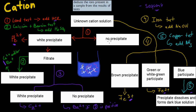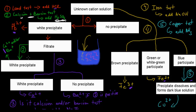For the second test, we're going to filter out any precipitate that formed so we only have the solution left — this is the filtrate. We're then going to add some sulfuric acid, H2SO4, into the solution. If a white precipitate forms, that means calcium and/or barium are present. So if you see a precipitate forming, you know that either calcium or barium or both are definitely in that solution.